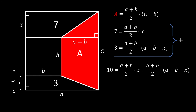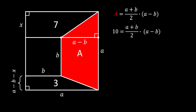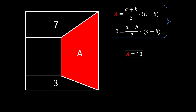Now let's take a look at those two equations. If we add them together, we notice there is a common factor on the right. Isolating it and canceling plus x and minus x, we get that 10 equals (a + b) / 2 times (a − b). Comparing this to our red area equation, the right-hand sides are identical, so our red area equals 10 square units.